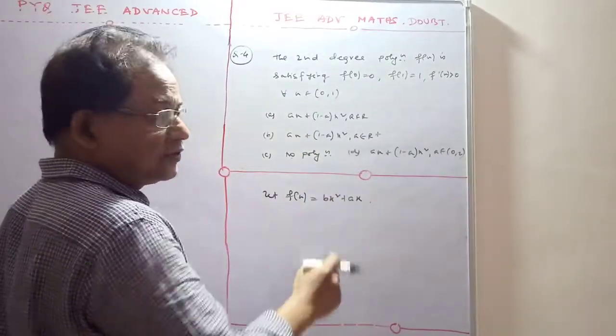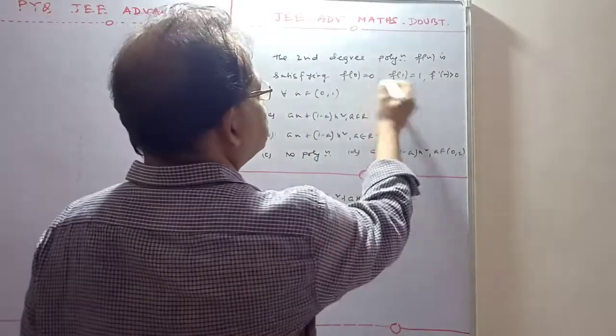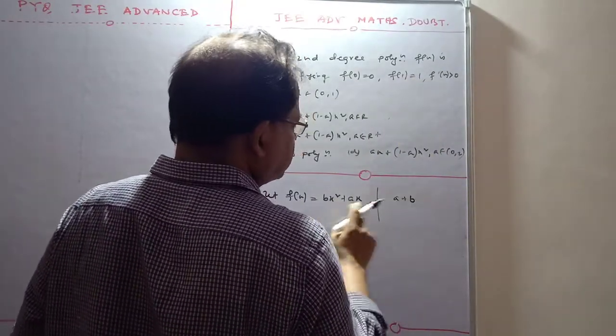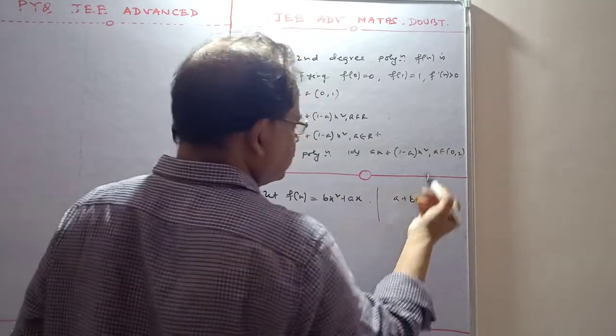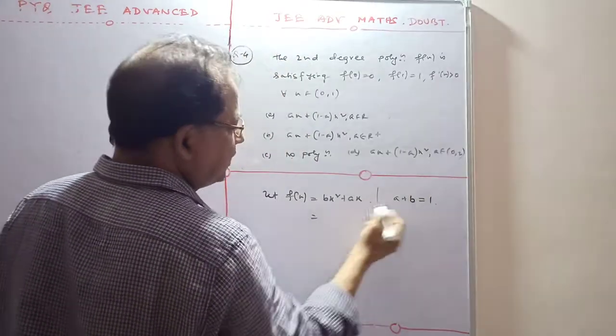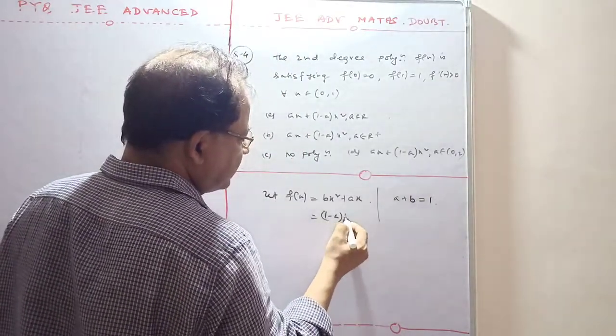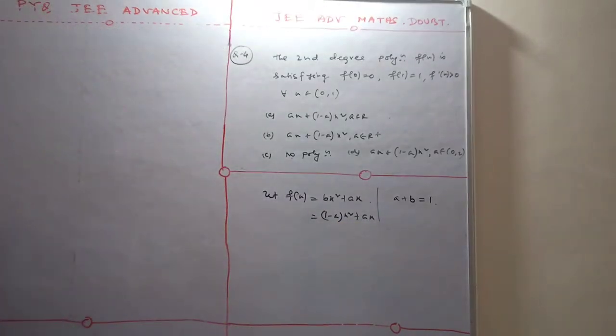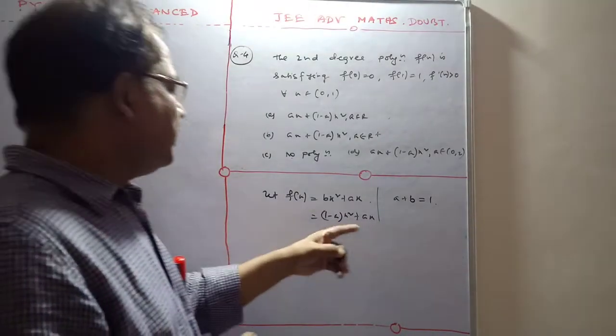Here f(1) = 1, so b + a = 1. Therefore b = 1 - a, giving us (1-a)x² + ax.